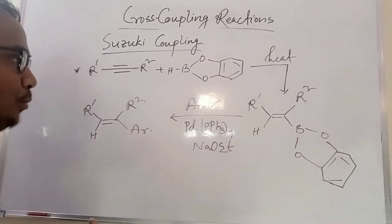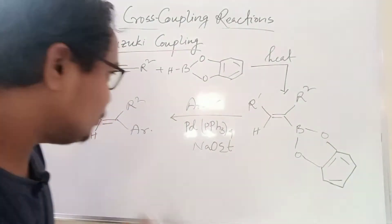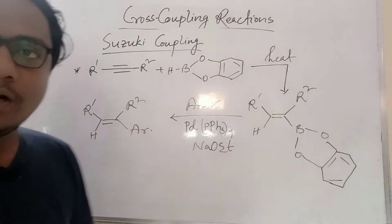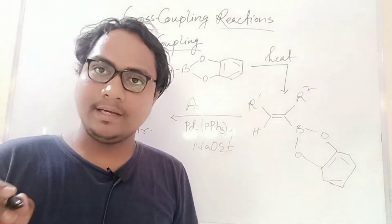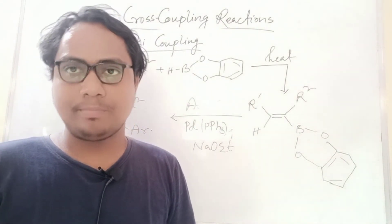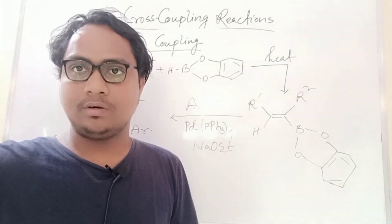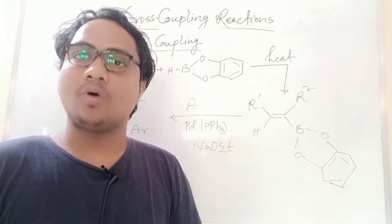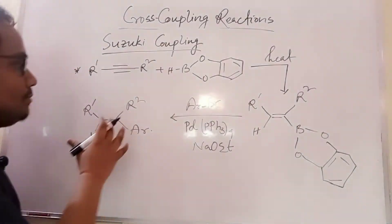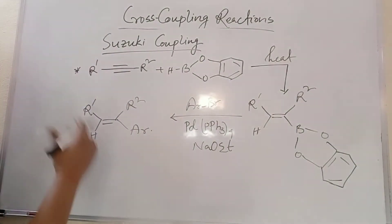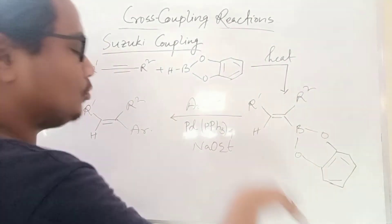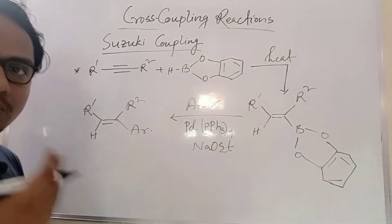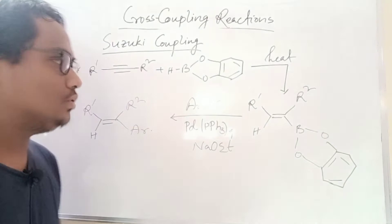Any organoboron compound coupled with palladium catalyst and an alkyl halide gives an alkyl product — this is called Suzuki coupling. Any organoboron compound in the presence of palladium catalyst coupled with alkyl halide or any organic halide gives a normal alkene. To generate the organoboron compound, I show the example: use a terminal alkene and a boron reagent — hydroboration will happen.